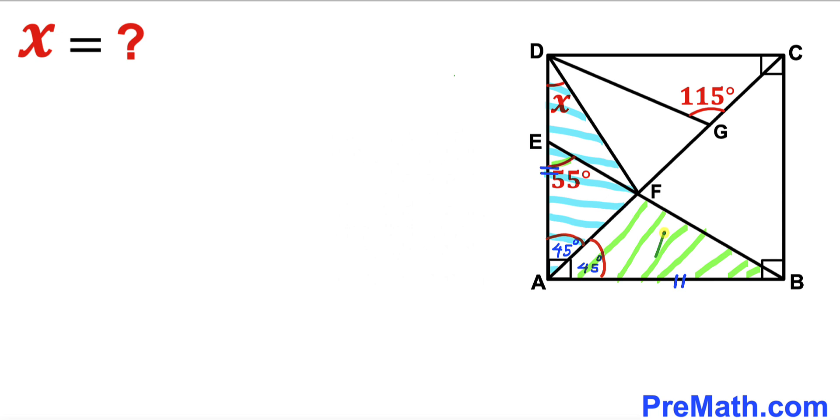Let's focus on the green and blue shaded triangles. We can see that triangle ADF is congruent to triangle ABF according to the Side-Angle-Side congruence theorem.